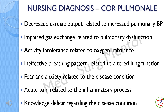Common nursing diagnoses for patients with cor pulmonale are: decreased cardiac output related to increased pulmonary blood pressure; impaired gas exchange related to pulmonary dysfunction; activity intolerance related to oxygen imbalance; ineffective breathing pattern related to altered lung function; fear and anxiety related to the disease condition; acute pain related to the inflammatory process; and knowledge deficit regarding the disease condition.